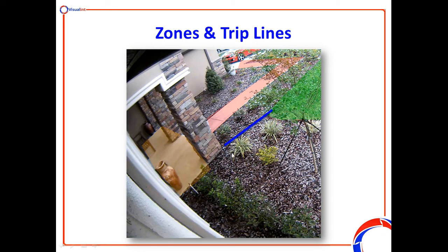You can also create virtual tripwires or zones. Here you can see a zone being created at the back of this property, there's also a red zone along the path and a green zone along the grass. Anyone entering, exiting, or loitering in any of these zones can trigger a particular event. There's also a blue virtual tripwire line — if somebody crosses that tripwire, and we can even apply directional algorithms, so crossing in a certain direction might trigger an event as well. It's the combination of object classification with zones and tripwires that really brings the magic of these cameras to life.